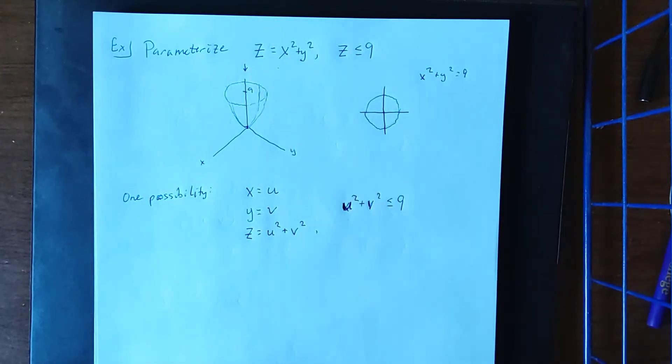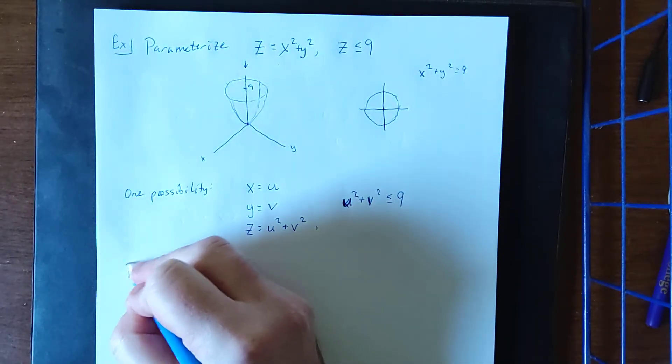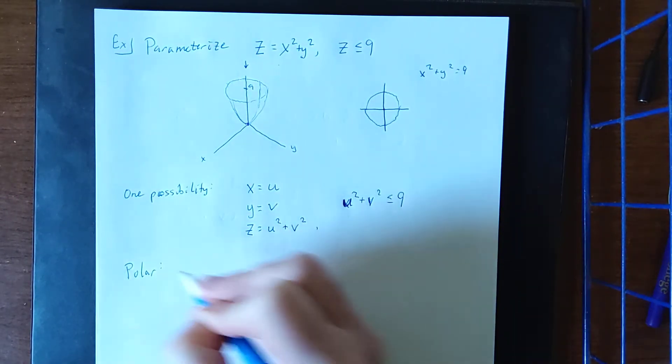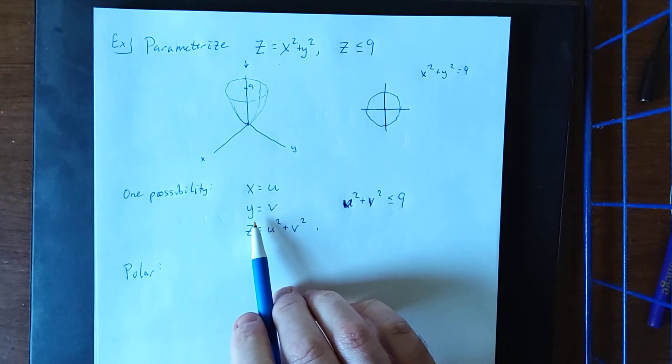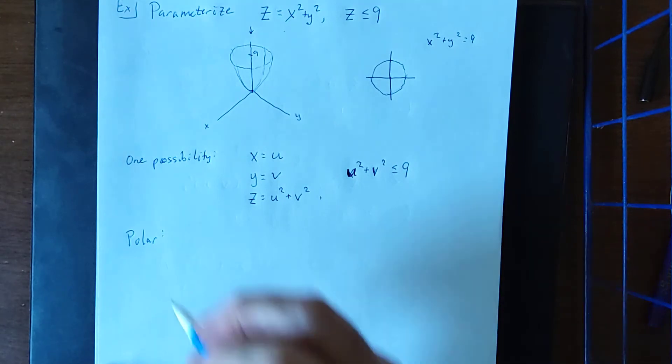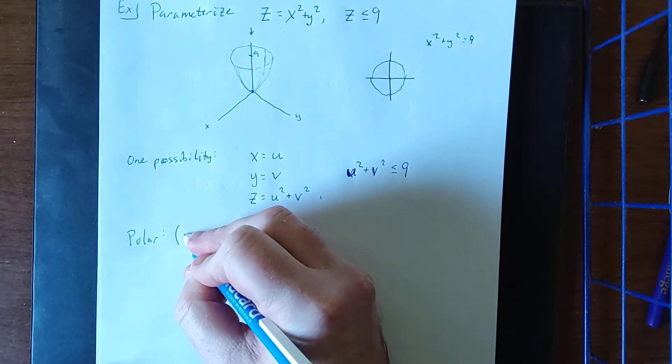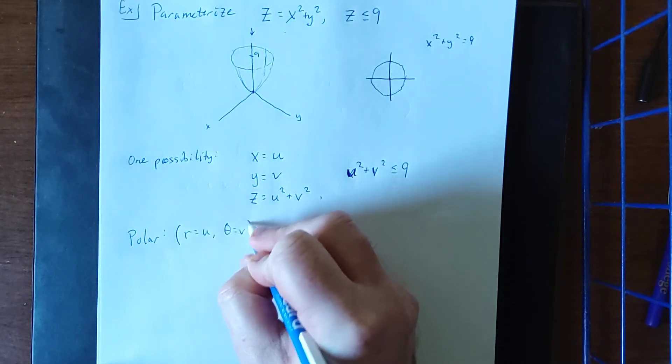However, as is usually the case for things that are round, what you might consider doing is a conversion into polar. Now in polar coordinates this is where we would let x and y be converted into r's and thetas. We're going to try to stay consistent with using u's and v's though. So in my mind what I'm saying is that r is going to be u and theta is going to be v.